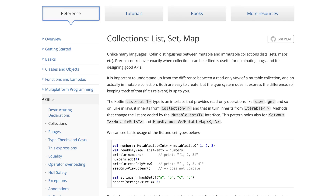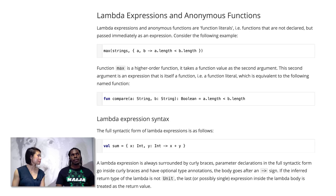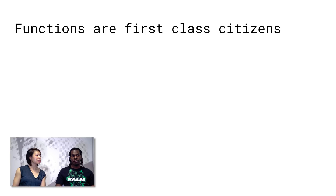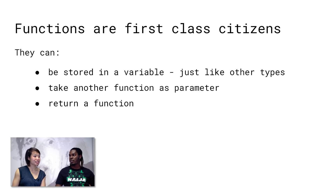In terms of where functional programming lives in Kotlin — it's in a lot of the features of the language itself: the extensive collection framework with all the filters, the maps, and all the operations that are possible, and also in the lambda functions. It's a key thing in functional programming languages that functions are first-class citizens of the language, and that is true with Kotlin. First-class citizens of a language are the things that could be stored in a variable, like integers or strings. Functions can also be stored in variables, passed into other functions, and returned from other functions.